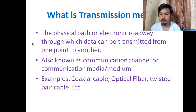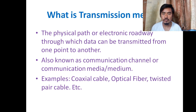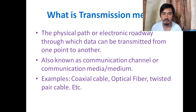Transmission media is the physical path or electronic roadway through which data can be transmitted from one point to another. A sender and receiver need to transfer data and communicate, so a medium is required between them. That medium may be a physical path or electronic roadway — it may be a visible path or an invisible path. For example, a telephone wire is physical and we can see it, but Wi-Fi we cannot see — but both are transmission media.